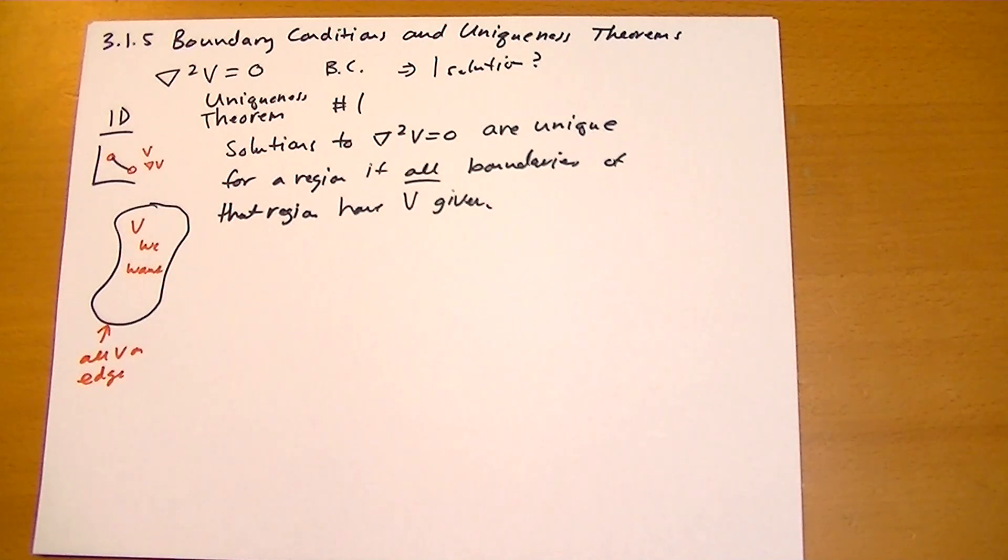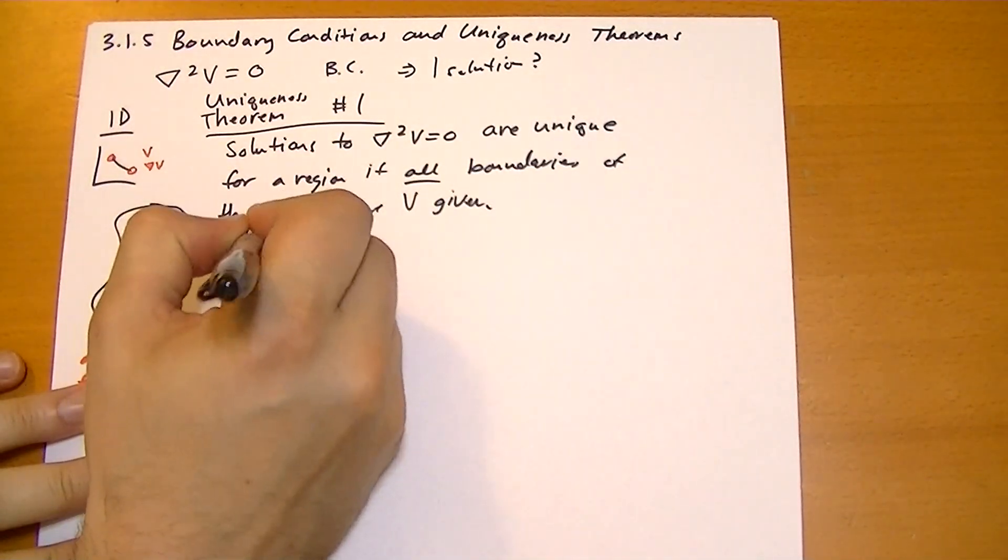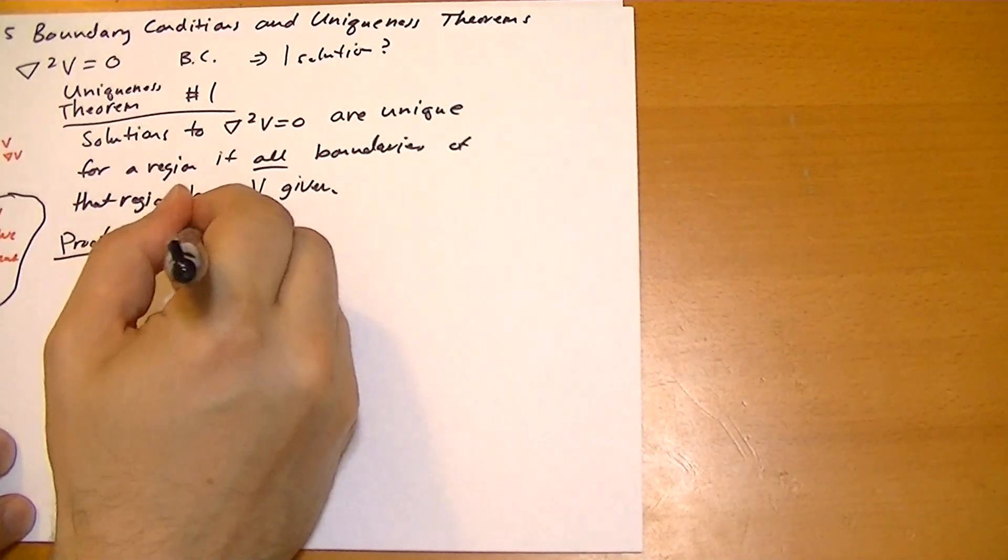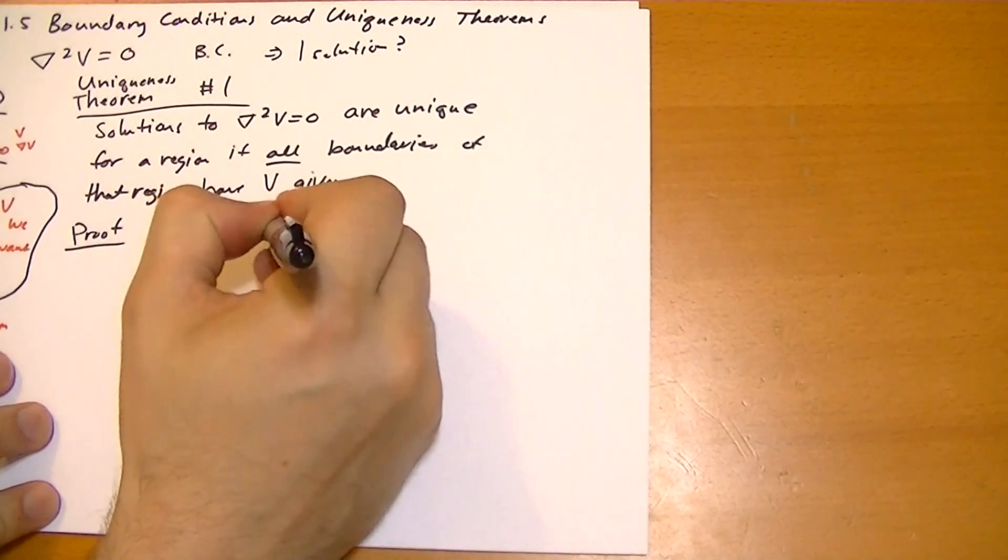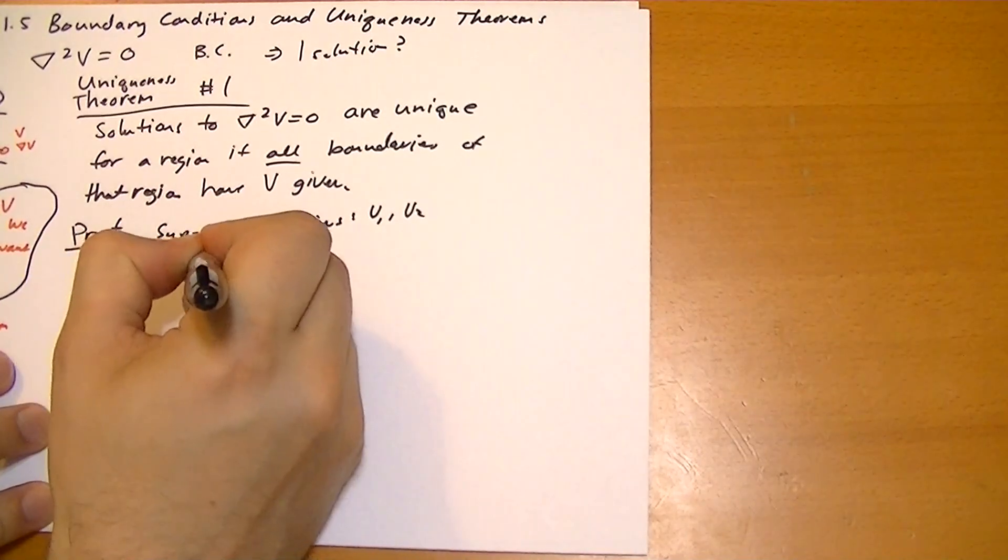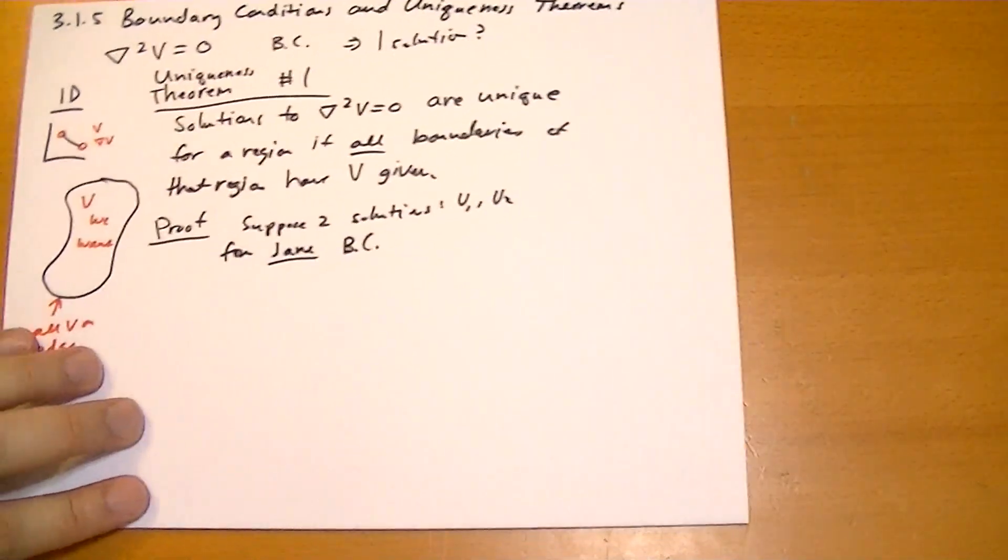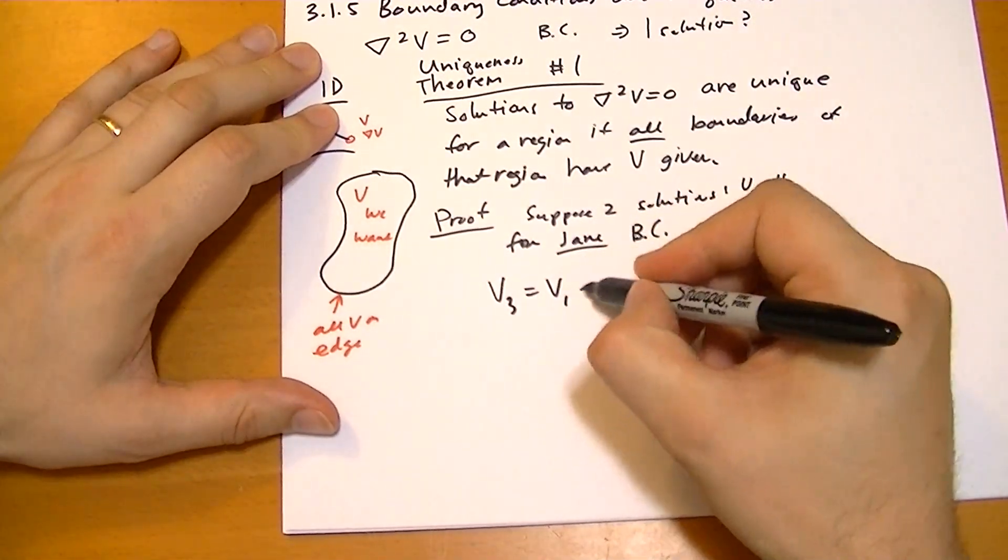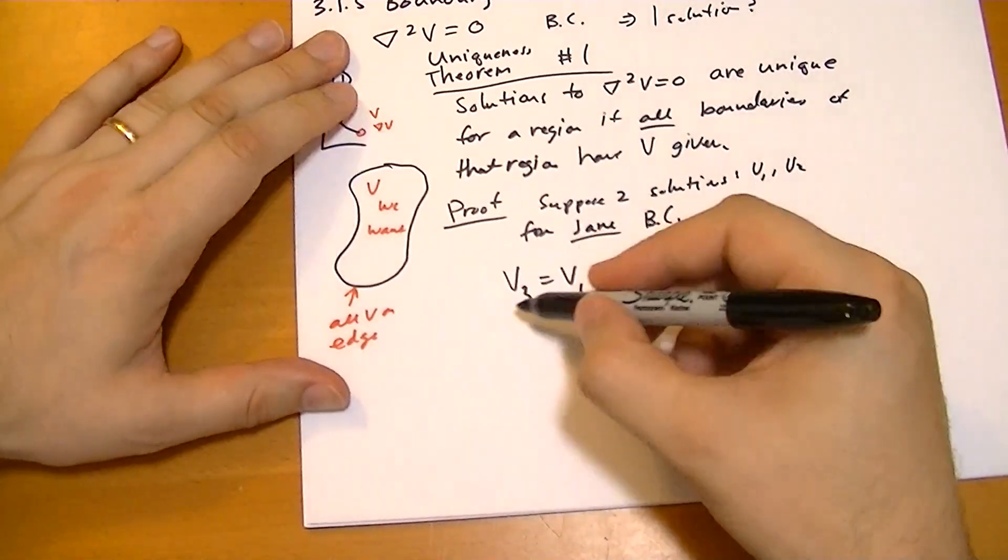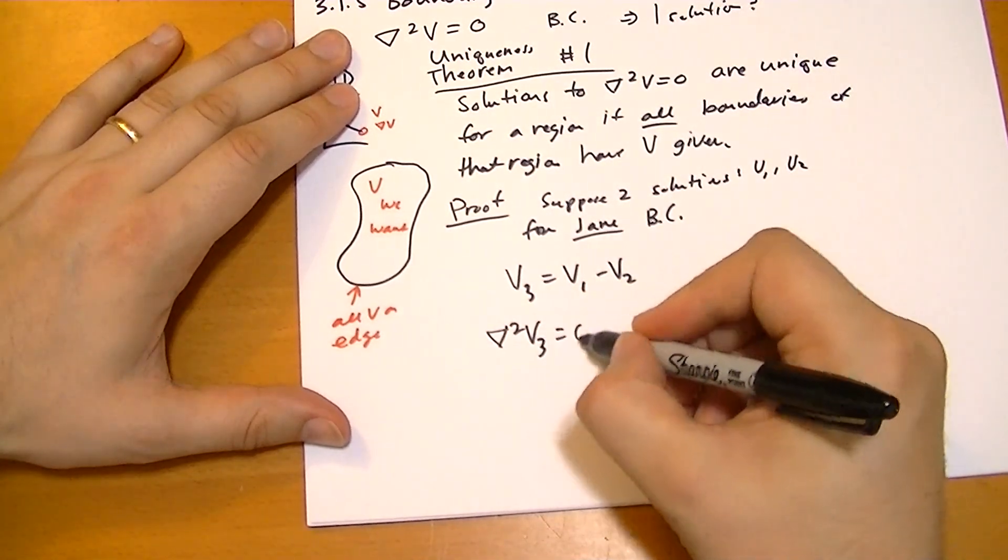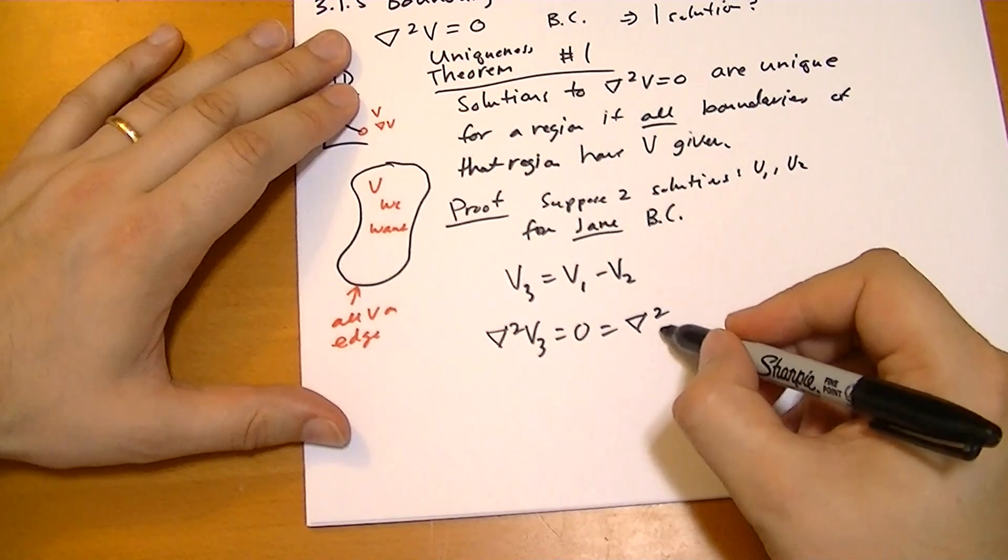Here's a short proof. Suppose we have two solutions, V1 and V2, for the same boundary conditions. Let's specify another potential V3, which is just equal to the difference between those. This is a potential as well, so it has to satisfy Laplace's equation. These other two have to satisfy Laplace's equation as well.